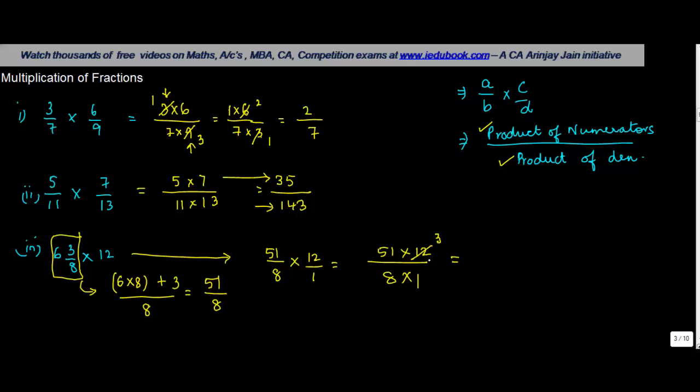Now if you see this carefully, 4 divides 12 to give you a quotient of 3 and 4 divides 8 to give you a quotient of 2. So you can simply write this as 51 into 3 divided by 2 into 1, or 153 divided by 2, which is the answer.